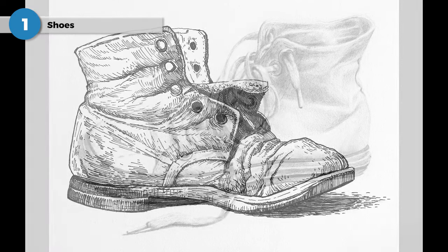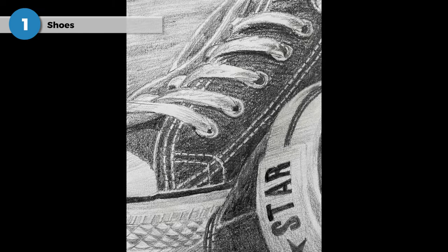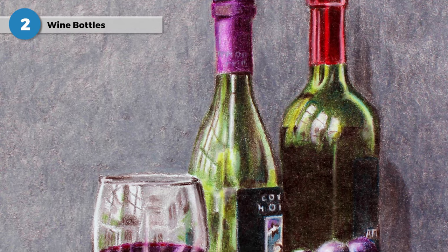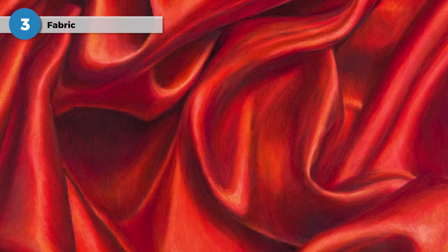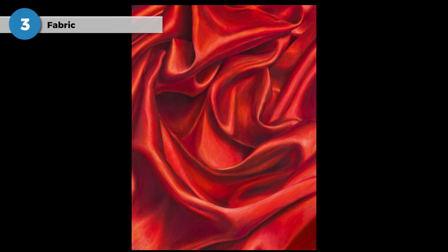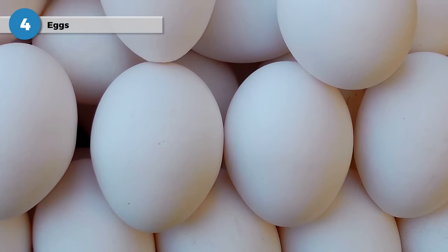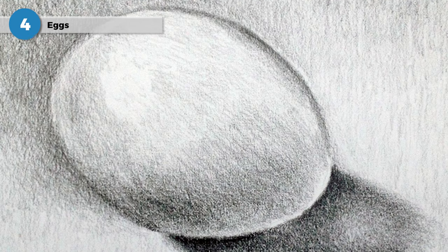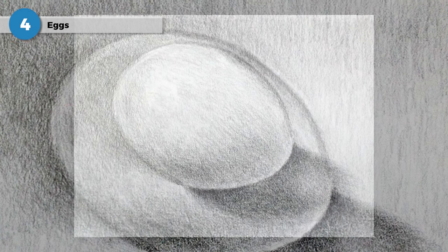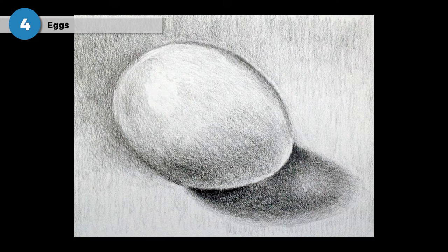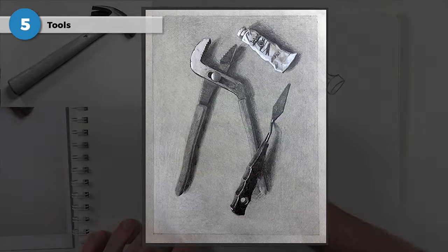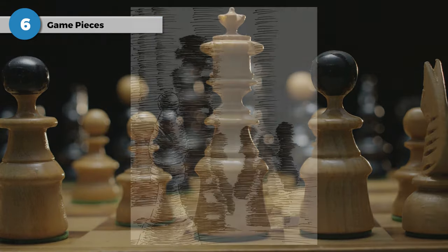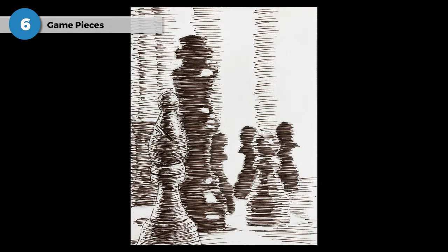The first thing is just an old pair of shoes — look no further than your closet to find a weathered pair, the older the better. Another idea, of course, are wine bottles, a classic subject. Look for an interesting label for an additional challenge. Fabric or folds of cloth is a great subject for practicing gradations of tone and value. Drawing eggs might seem like a boring subject, but they help us understand gradations of value and give us better control over the material. A hammer, or really any tools, make great subjects — a hammer is rather simple and should be fairly easy to pull off.